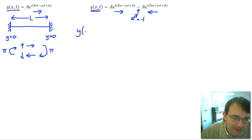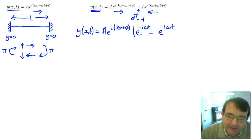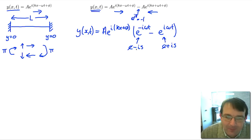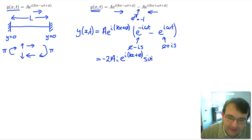So what does that mean our net displacement is going to be? y as a function of x and t is equal to A times e to the i times (kx plus phi), which is a constant factor in both terms. That leaves us with e to the minus i omega t minus e to the i omega t. Using Euler's formula, the first term is cos(omega t) minus i sin(omega t), and the second is cos(omega t) plus i sin(omega t). The cosine terms cancel, leaving minus 2i sin(omega t).